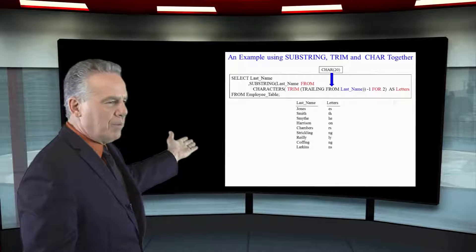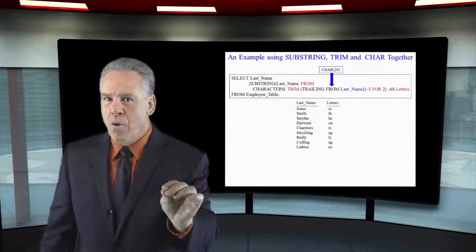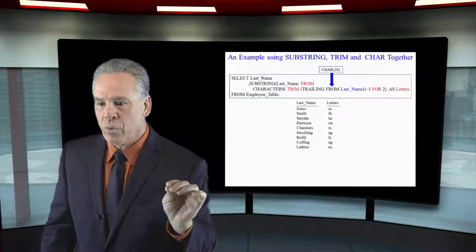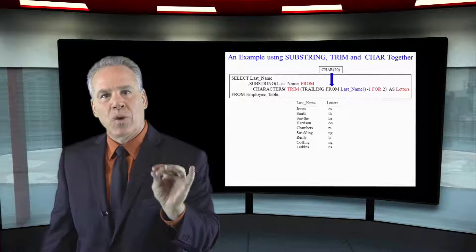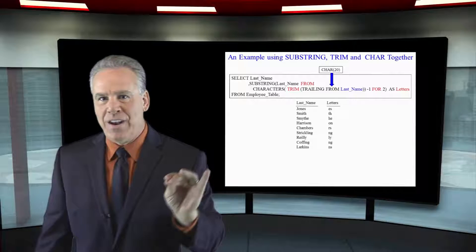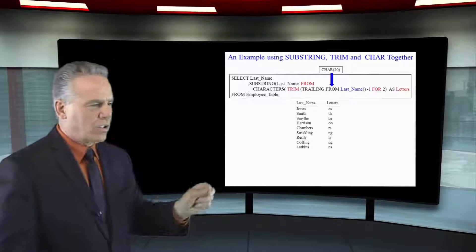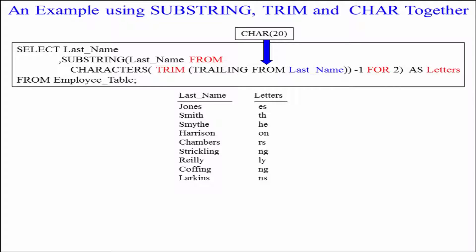And we say first of all trim the trailing from last name, all the spaces are gone in that car 20 so we actually have that last name right there. Then I want you to count the characters in that trimmed last name.